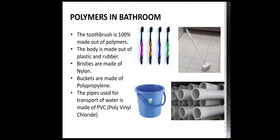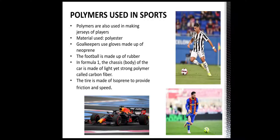Now let's talk about the different polymers we see in our daily lives. The polymers in the bathroom: the toothbrush we use to brush our teeth is 100% made of polymers. The body of the toothbrush is made of hard plastic and rubber for a good grip, while the bristles are made of nylon — a soft yet firm material perfect for cleaning teeth. Buckets used for water storage are made of polypropylene, and pipes used for water transport are made of PVC, that is polyvinyl chloride.